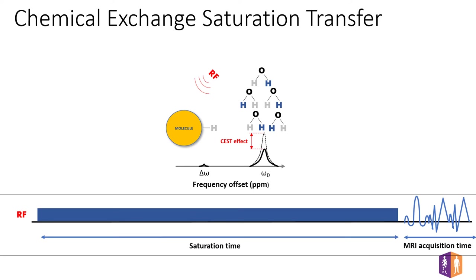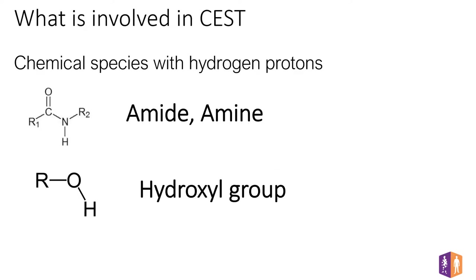In CEST MRI imaging, the saturation protocol is followed by fast acquisition sequences, such as single-shot echo-planar imaging. Using the process of continuous resaturation and proton exchange, CEST can enhance the detection of certain metabolites found in the human body whose concentration would not be sufficient for detection by classic MRI imaging sequences. Their detectability is amplified by a factor of 100 if this exchange takes place 100 times.